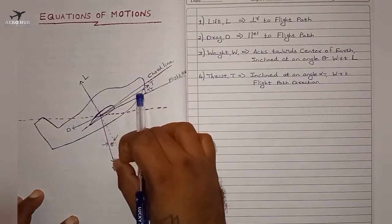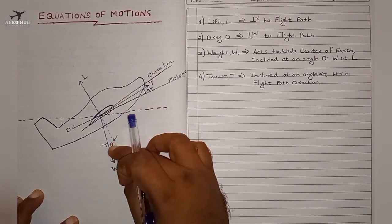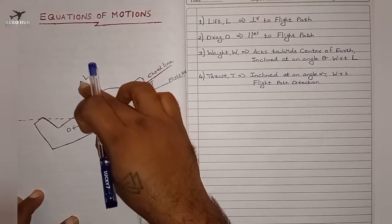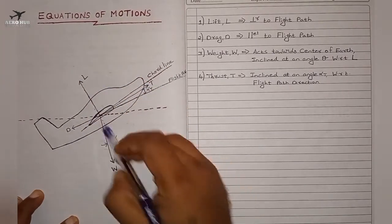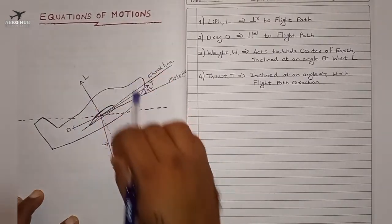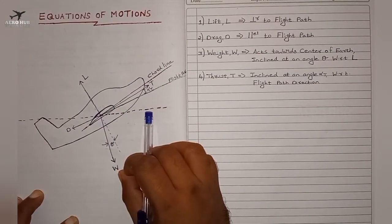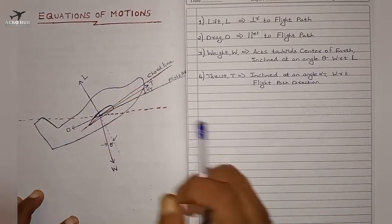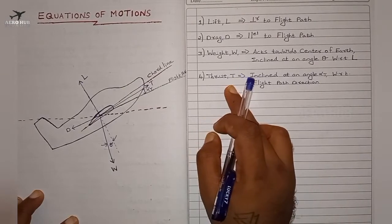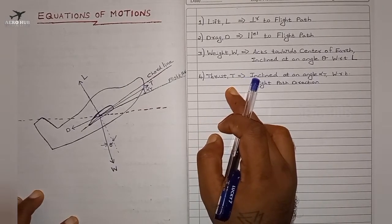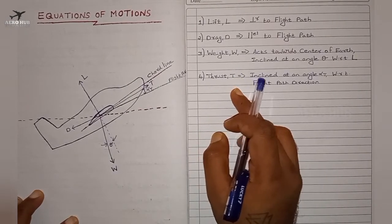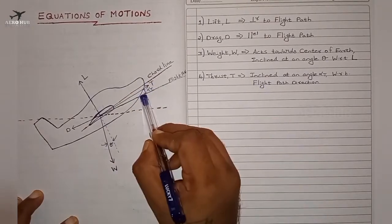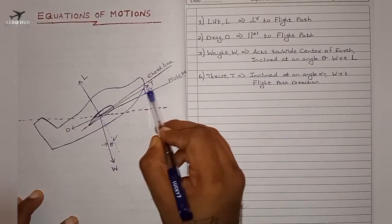Next is weight, acting vertically downwards towards the center of the earth. This weight force is at an angle theta with respect to the direction of lift. We also have thrust, which powers the aircraft, and this thrust force is inclined at an angle alpha-t with respect to the flight path direction.